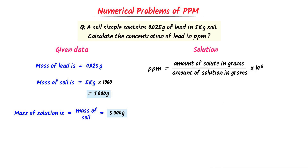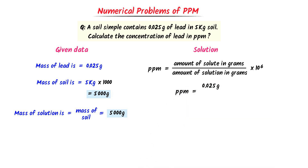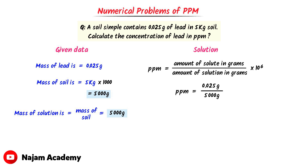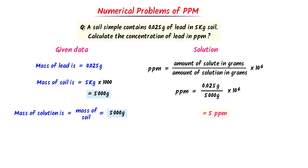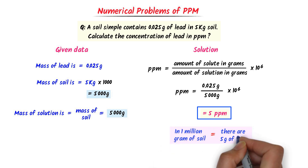The solute is lead with a mass of 0.025 grams, and the solution is soil with a mass of 5000 grams, multiplied by 10⁶. After calculation, I get 5 ppm of lead. Thus, 5 ppm means that there are 5 grams of lead present in 1 million grams of soil.